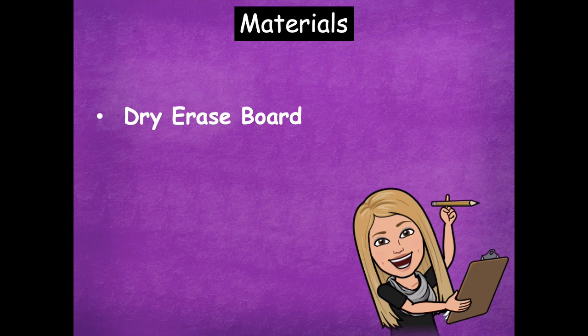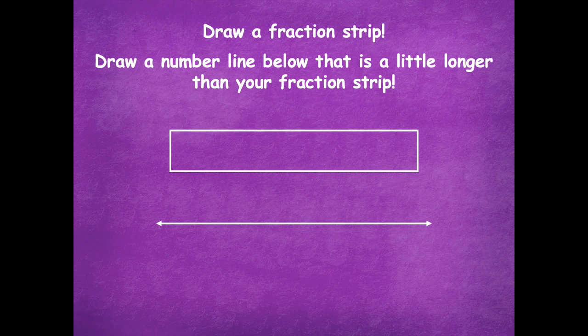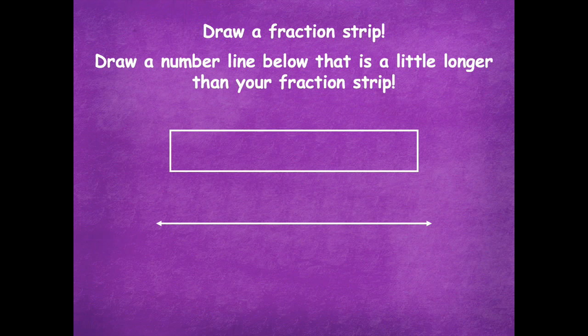The materials that you'll need are your dry erase board, so make sure you have that before we get started. We're going to relate a fraction strip to a number line — we'll draw a fraction strip and then draw a number line below that that's a little bit longer. Pause the video, draw a rectangle any size, then draw your number line just a little bit longer than that, and click play when you're ready.